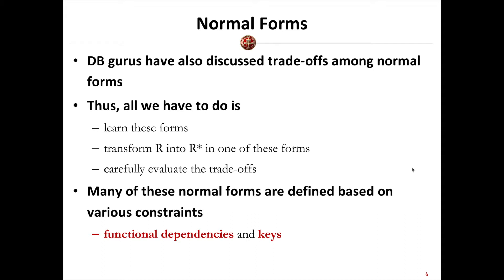To ensure we have certain normal forms, we may have to divide some relations into smaller ones. The division of relations may create lots of time costs if we plan to do a query among these relations. If we divide a relation into two and need to query later, we may have to do joins among them, which creates lots of time costs. Therefore, normally for the normal forms, we have a trade-off.